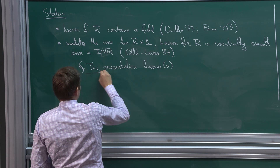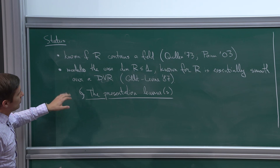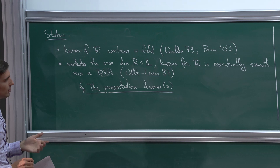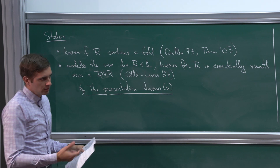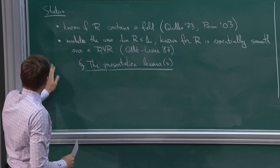These lemmas were first used for the Gersten conjecture, and later found to be useful for studying many other functors. A question was raised about whether the conjecture is known for DVRs like Z_p. The answer is no — one needs the conjecture not just for Z_p itself, but for local rings of generic points of smooth schemes over Z_p, which are more complicated.